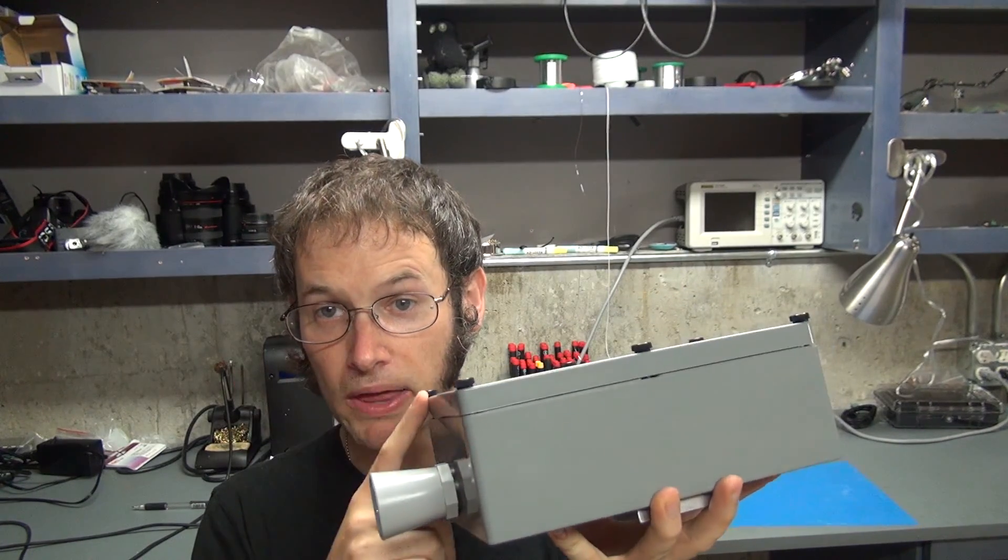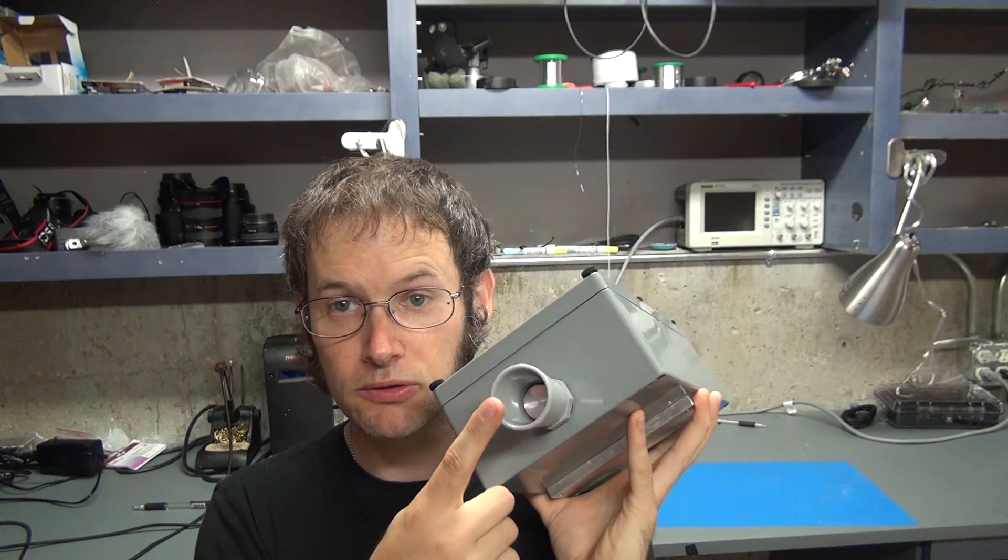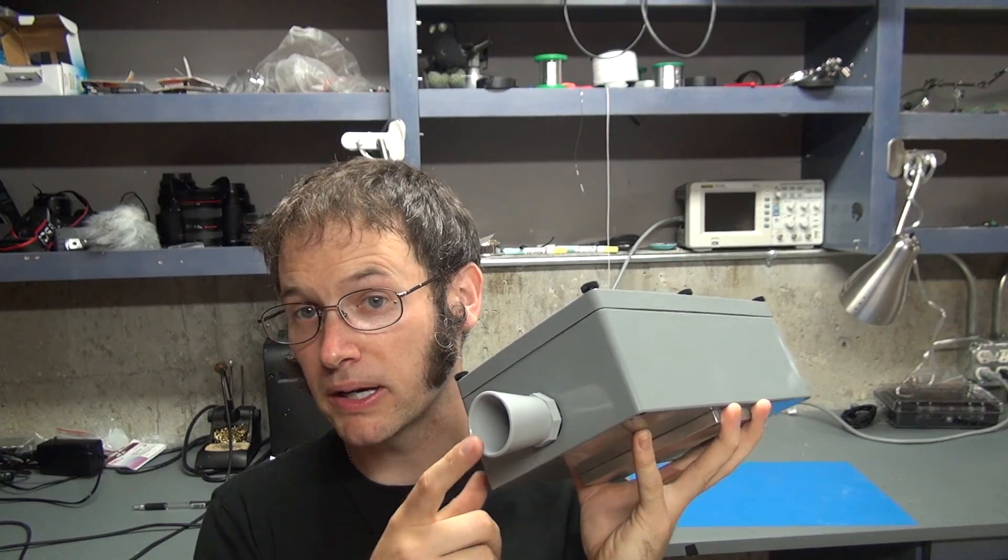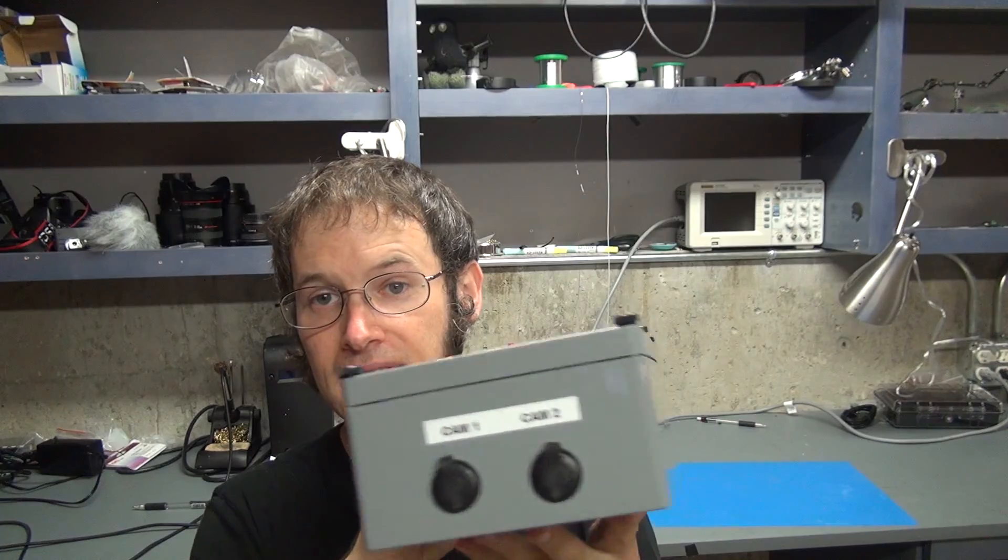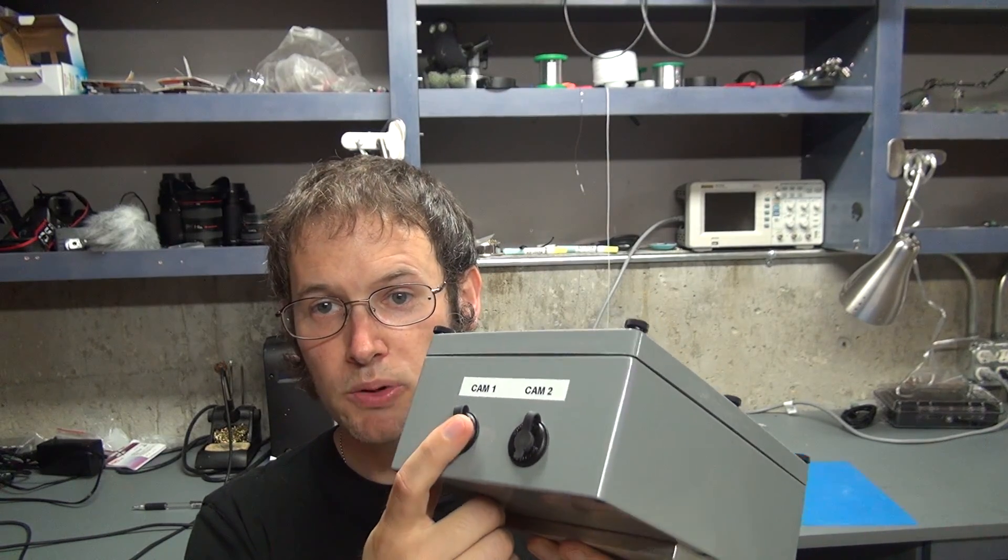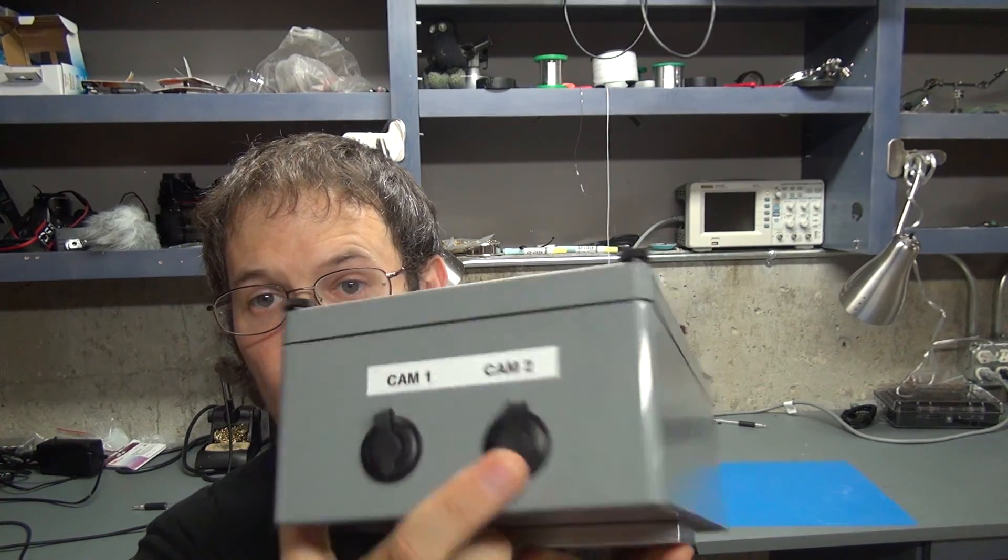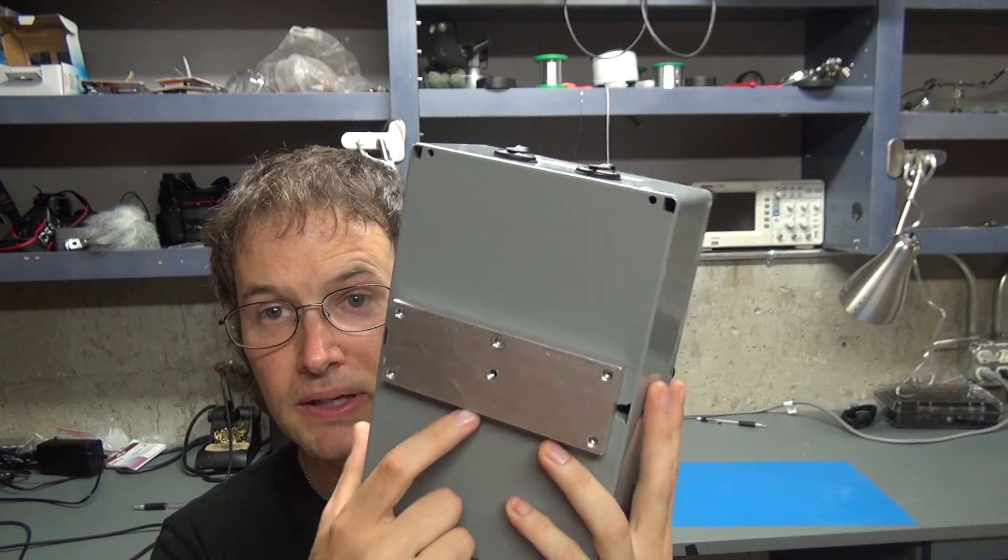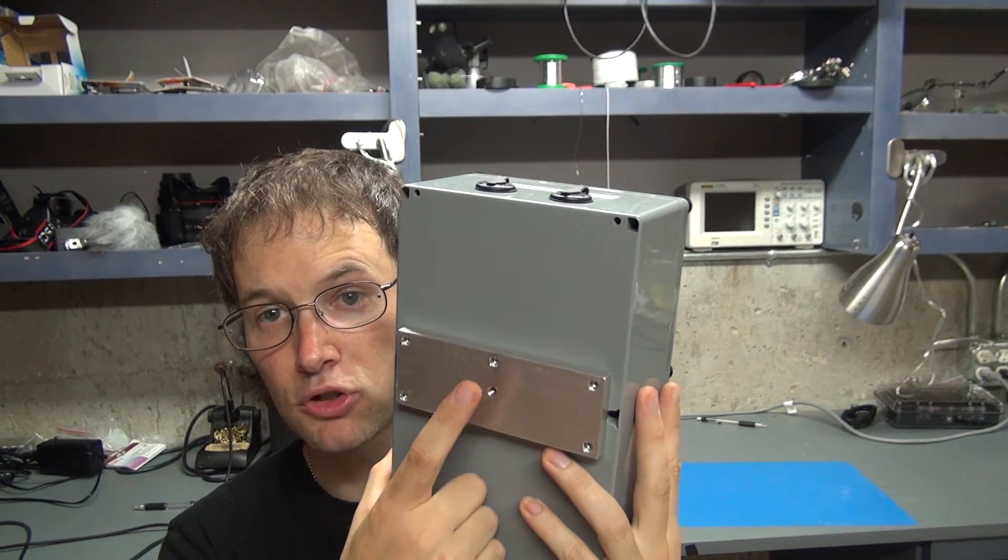The idea is that this is a weatherproof box. Here is a weatherproof sonar that detects people as they are running across the finish line or a strategic position in the race. On this side it's got weatherproof 3.5 millimeter jacks for your camera one and your camera two. On the bottom there's a nice big plate here to mount a tripod with a standard tripod mount.